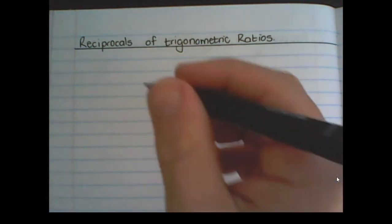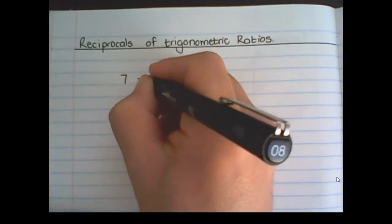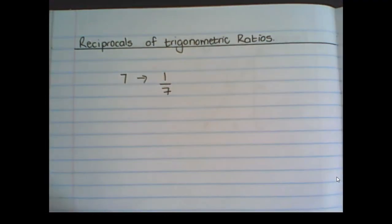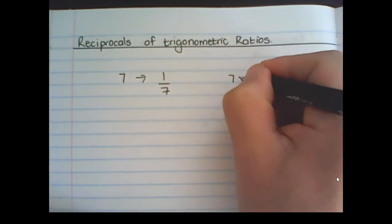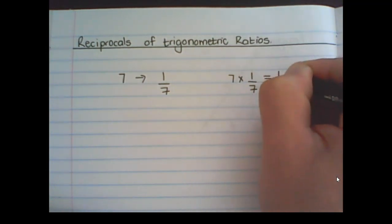Take for example the number 7. Its reciprocal function is 1 over 7.